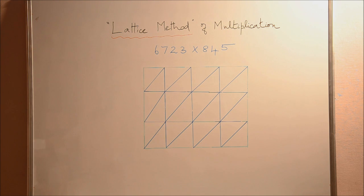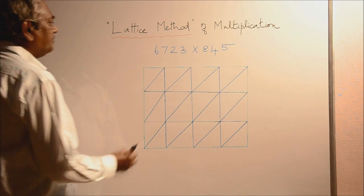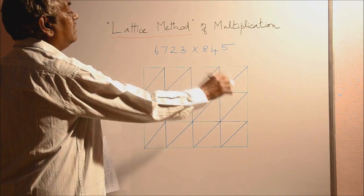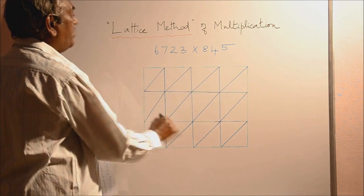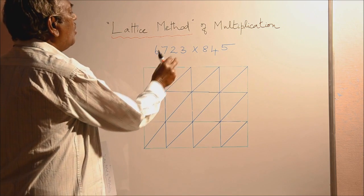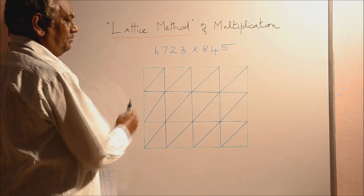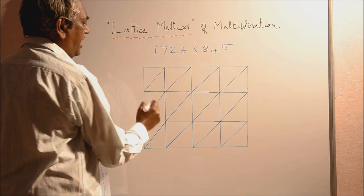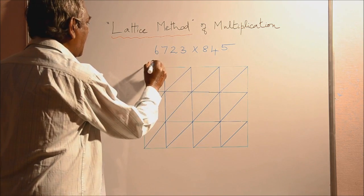Now let us consider this product. Now we are having a rectangular which consists of so many cells, that is 4 by 3, 4 columns there and 3 rows. For 6, 7, 2, 3, I am going to write it here as,